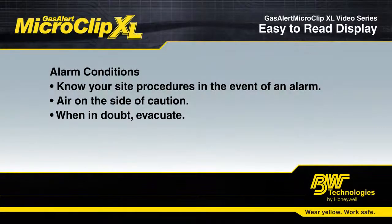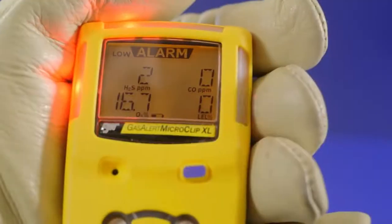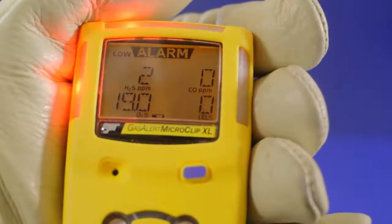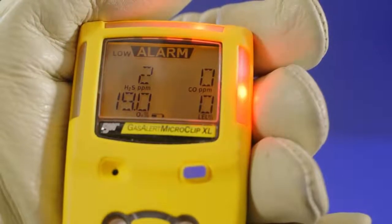Hopefully, you never encounter an alarm. In the event you do, follow your evacuation protocols and your site procedures. How do you know which gas is in an alarm condition? The gas below the reading will flash. In this case, the oxygen sensor is in alarm.